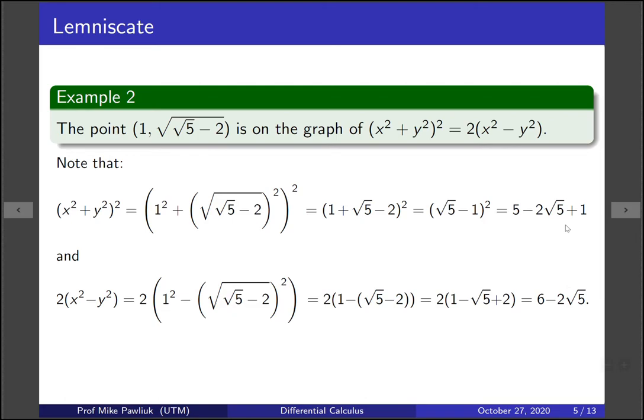Are these two things the same? Yeah we can see that if we move this plus one into the five they really are the same. So for this x, y value we have that the left and right hand sides are the same, so this point is on the graph of the lemniscate.